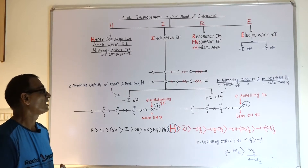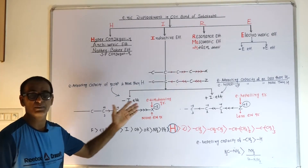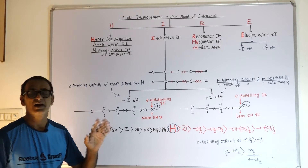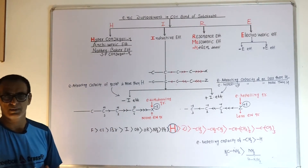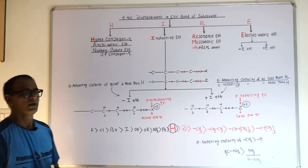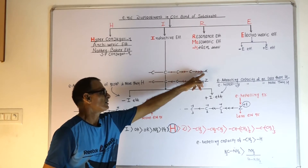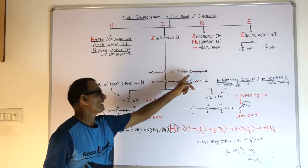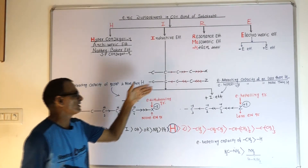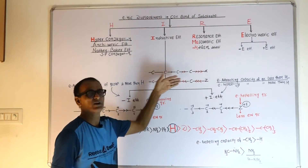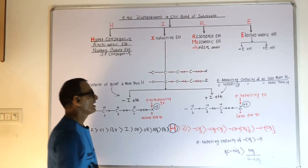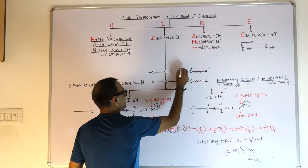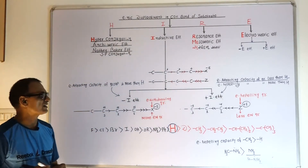The displacement of sigma electrons occurs along the saturated carbon chain when a more or less electronegative atom is attached with one terminal of the carbon chain. Suppose an electron-withdrawing group X is attached — the electron activity of X is more compared to carbon, so the sigma bond electrons get dragged towards X. As a result, a minus delta charge arises on X and a plus delta charge arises on the carbon chain.